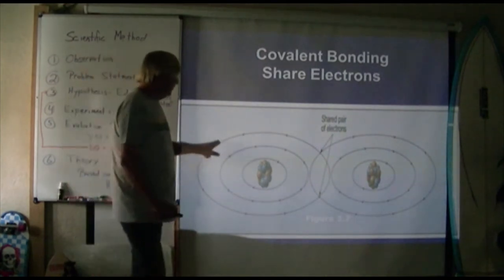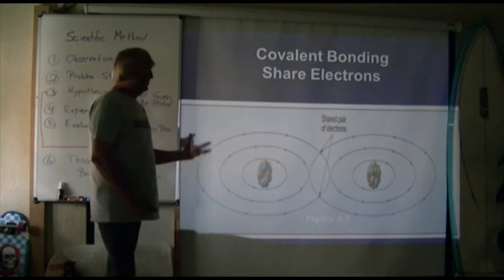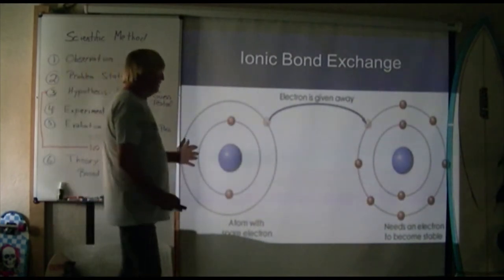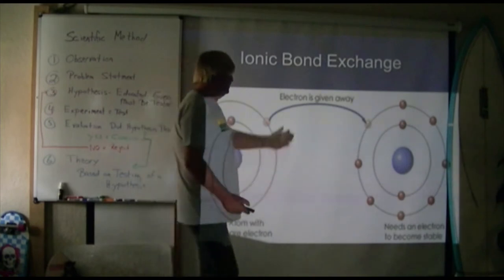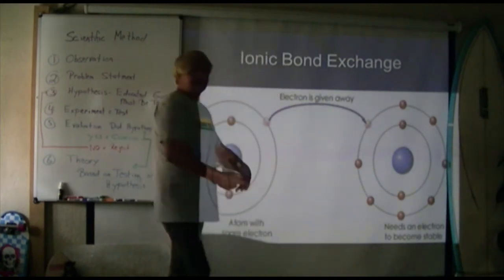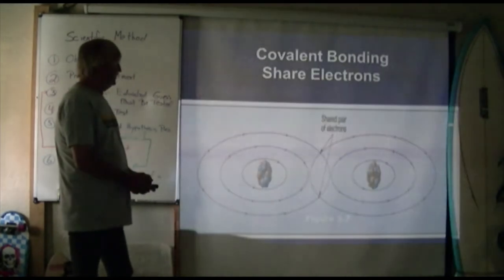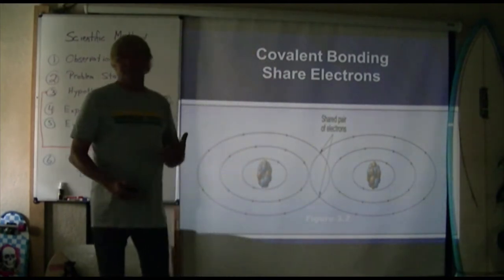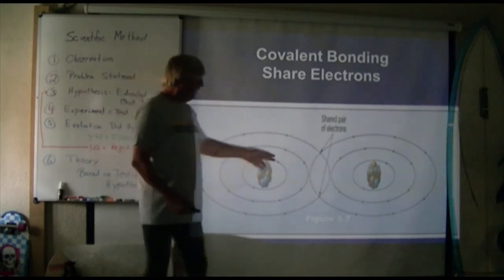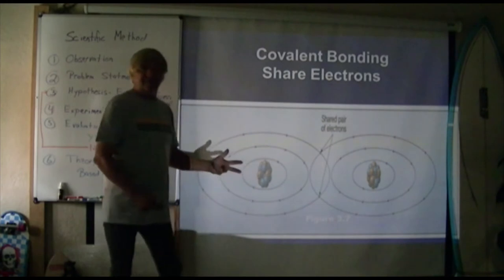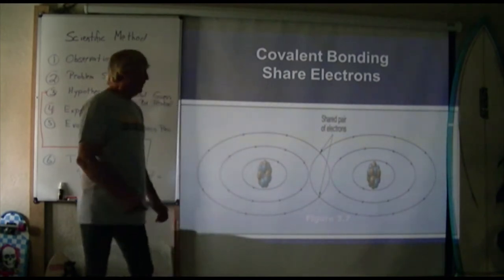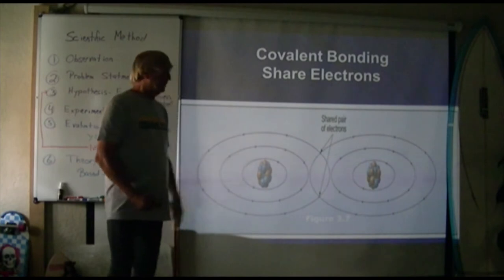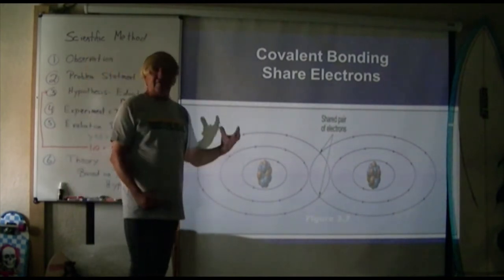In a covalent bond, the outer orbitals overlap, resulting in a very strong bond. The difference between covalent and ionic bonds is primarily that in an ionic bond the electrons are being exchanged, and something might interfere with that exchange and break the atoms apart. With a covalent bond it takes much more energy to separate the orbitals, hence a much stronger bond. This is the problem with water — if we could efficiently break this overlapping orbital, we could use hydrogen as a fuel. There is no shortage of water; you could even do it with salt water.